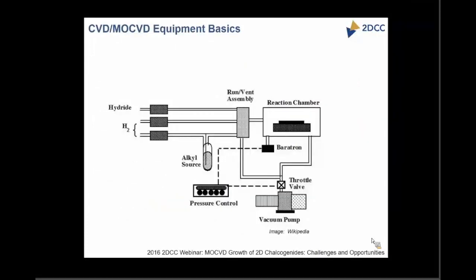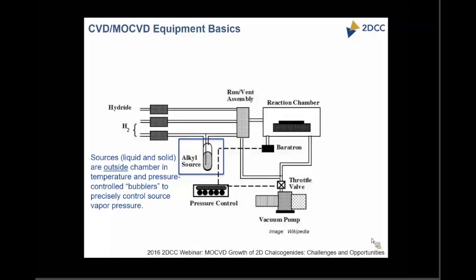That is what leads me to the gas-source CVD part. This is a typical schematic of a chemical vapor deposition system. The sources are solids or liquids placed outside the chamber, usually contained in stainless steel bubblers where we can control temperature and pressure. By doing that, we control the actual concentration of the source and introduce gases into the reaction chamber — we're no longer relying on having a precursor inside the reaction chamber for growth to happen.